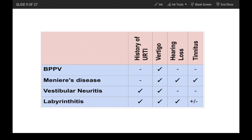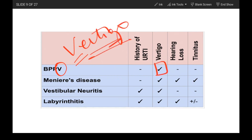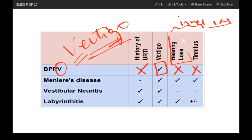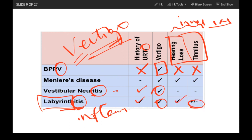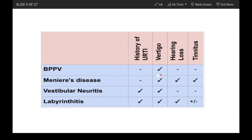As a quick revision: BPPV has a 'V' for vertigo — it is the only main symptom, with no URTI, hearing loss, or tinnitus, because the inner ear is not affected. When the inner ear is affected, the patient will have hearing loss and tinnitus. Vestibular neuritis and labyrinthitis have '-itis' — inflammation following an infection such as URTI. In labyrinthitis, the labyrinth (inner ear) is inflamed, so the patient also has hearing loss and tinnitus. For Meniere's disease, remember the triad: vertigo, sensorineural hearing loss, and tinnitus.